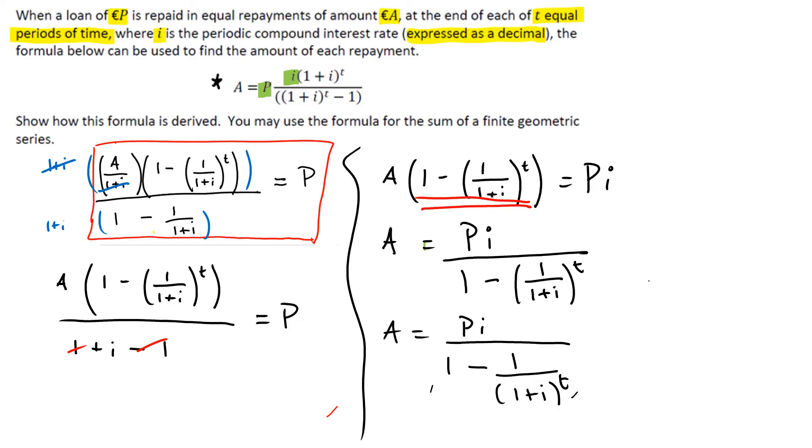So that gives me a 1 plus I to the power of T here at the bottom. And what we can do then is multiply the top by 1 plus I to the power of T and the bottom by 1 plus I to the power of T. And what we end up with here is A equals P I times 1 plus I to the power of T times 1 plus I to the power of T.